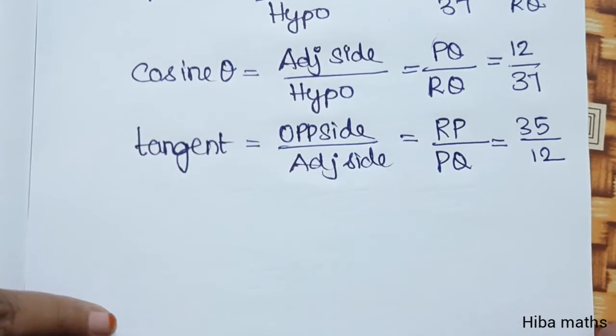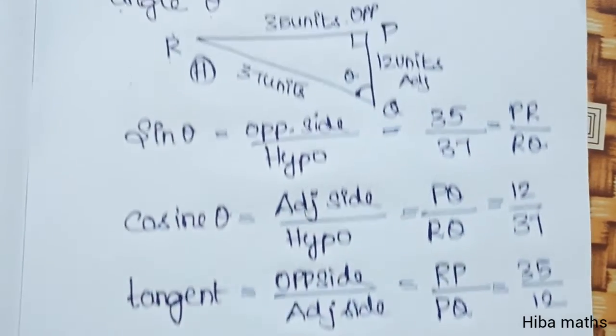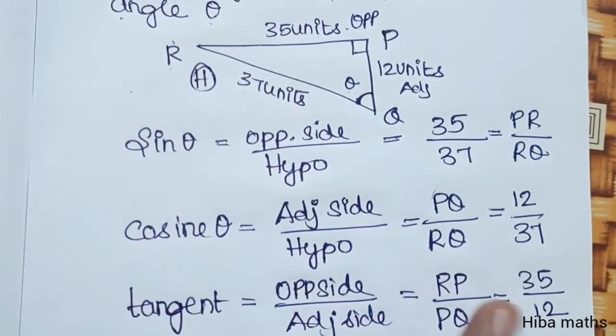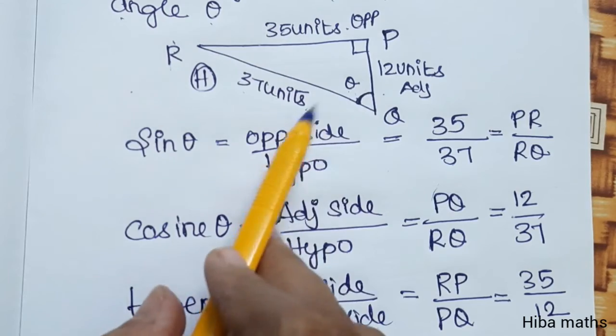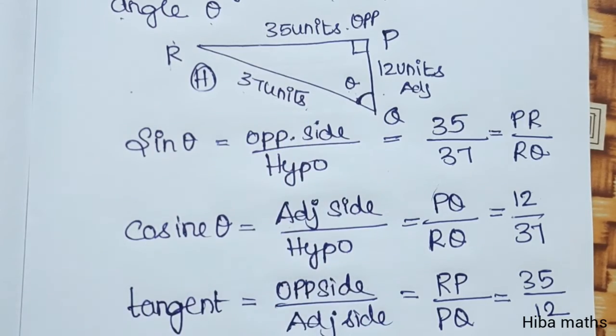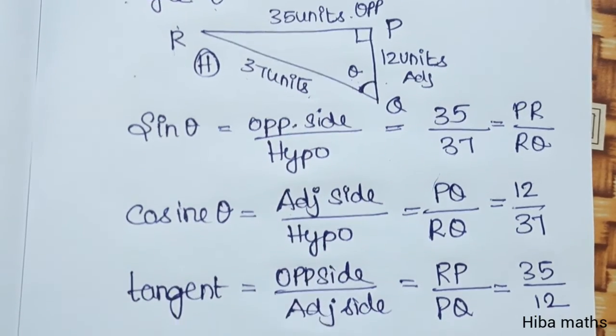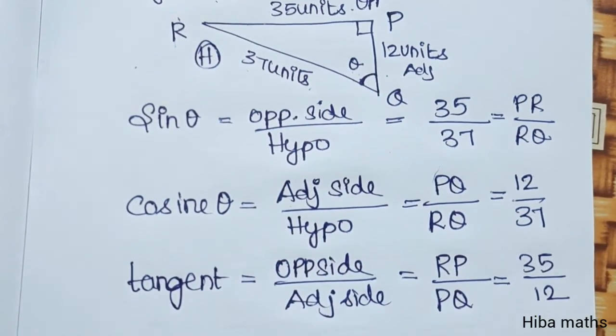If you understand the diagram of the path, go to the opposite side, adjacent, hypotenuse path. Thank you so much for watching.